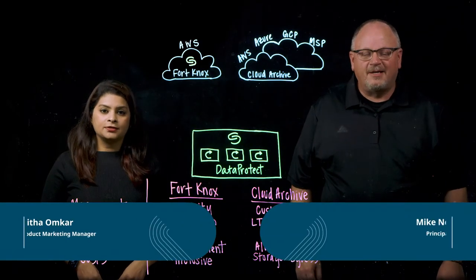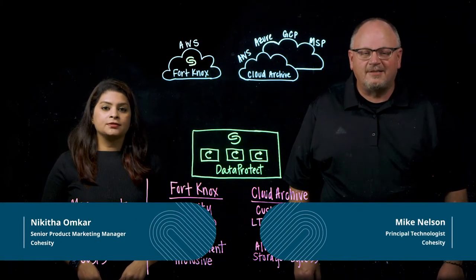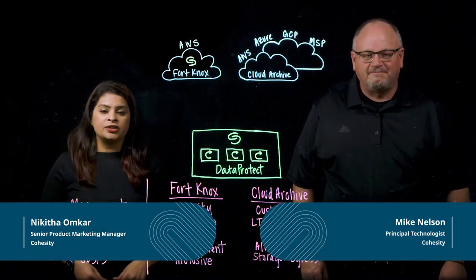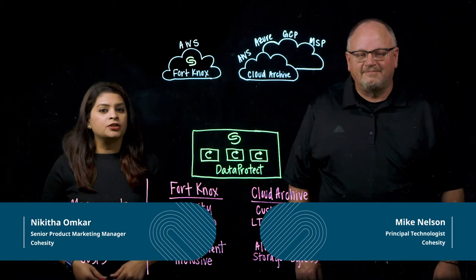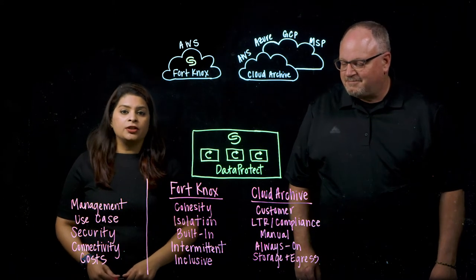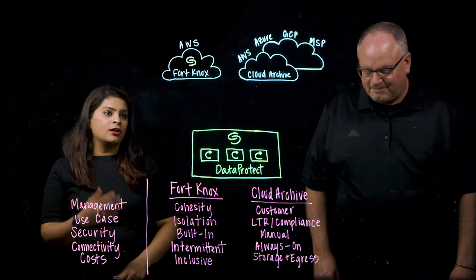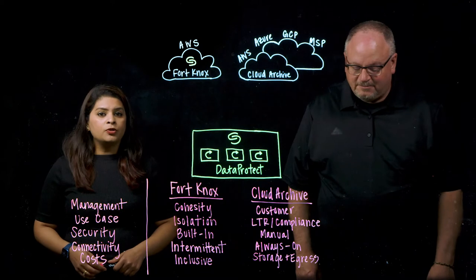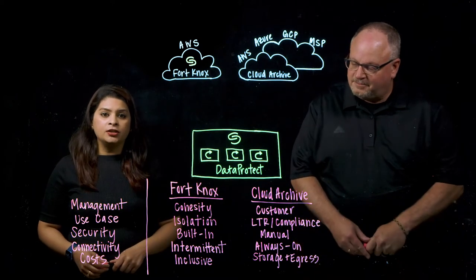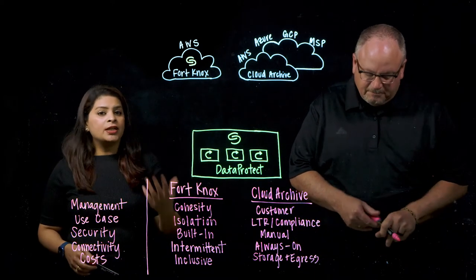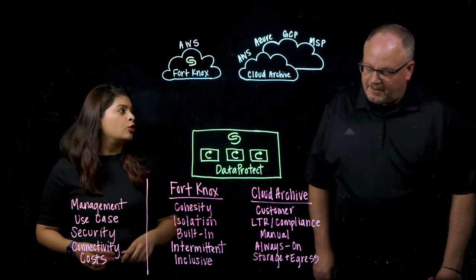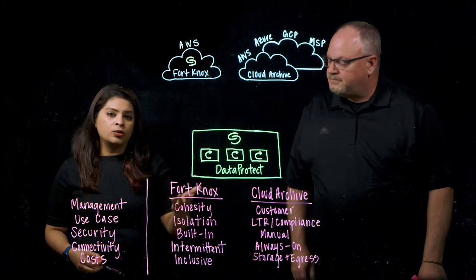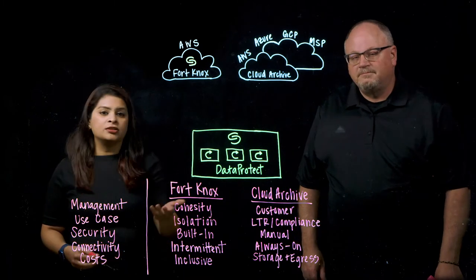Hello everyone. My name is Mike Nelson, and I'm a principal technologist on the technical advocacy team here at Cohesity. And I'm Nikita Omkar, a senior product marketing manager here at Cohesity. Today we're going to be talking about the differences between Cohesity Fort Knox and Cohesity Cloud Archive — two solutions that help create an offsite copy of data, but for different purposes. Before we get into the details, let's go through the architectural diagram of these two solutions, which will help us understand how they work and why we may pick one over the other.